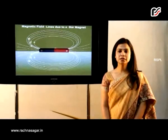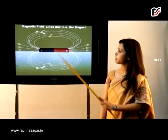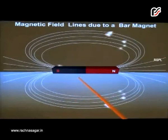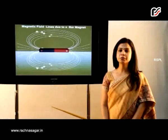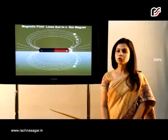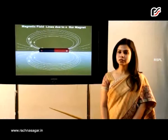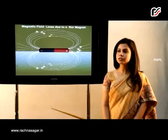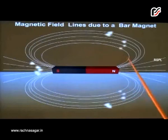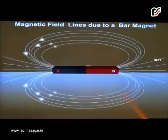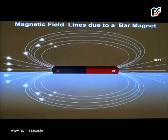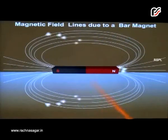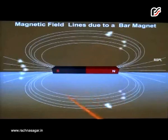The magnet exerts its influence in the region surrounding it, as you can see in the animation. Therefore, the iron filings experience a force. This force makes the iron filings arrange themselves in a concentric circles pattern. The region around the magnet in which the force of the magnet can be detected is known as the magnetic field.